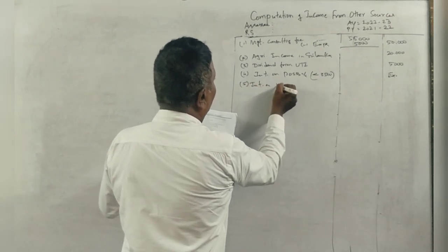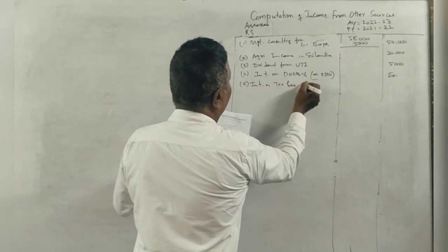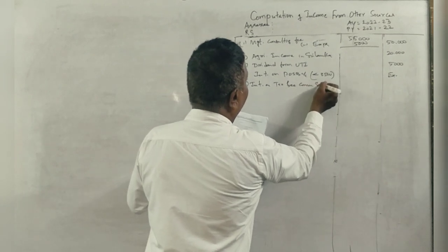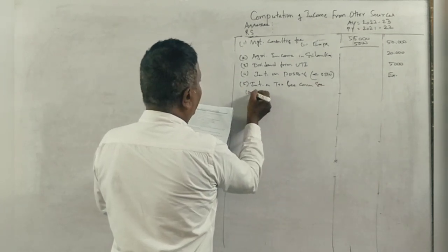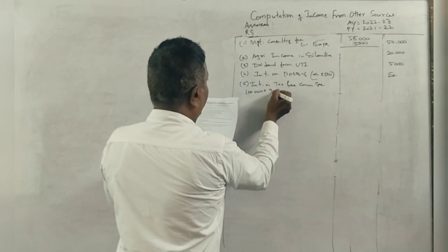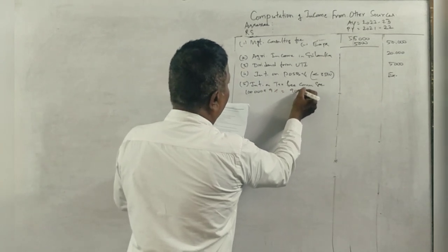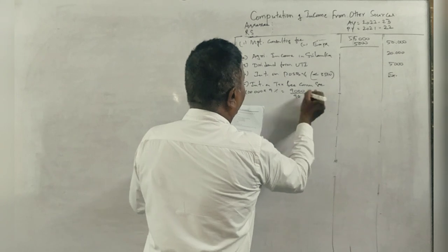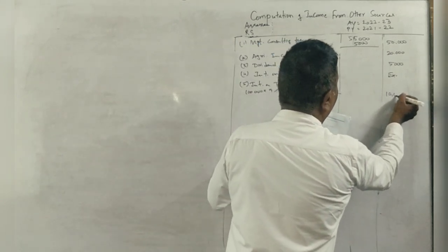Interest on tax-free commercial securities: Rs. 1,00,000 into 9% is Rs. 9,000 divided by 90 into 100. Next, Rs. 30,000.